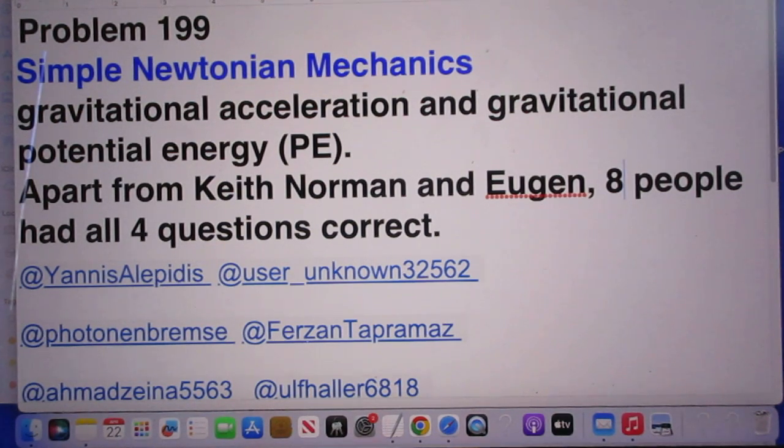Here follow the solutions, that's to say Keith Norman's solutions, of problem 199. It was a simple Newtonian mechanics problem. It dealt with gravitational accelerations and gravitational potential energy.